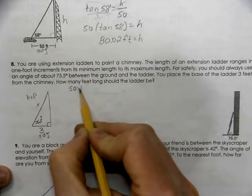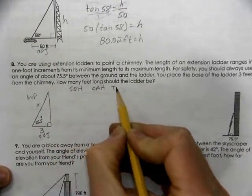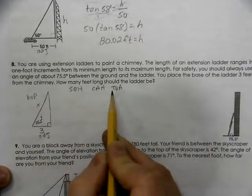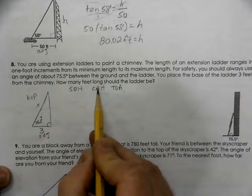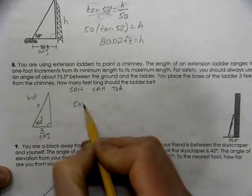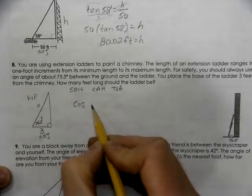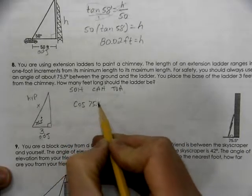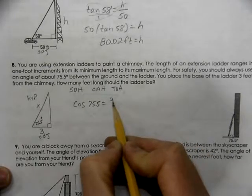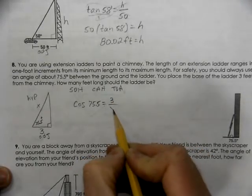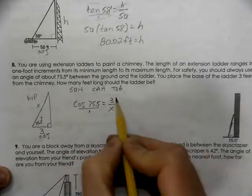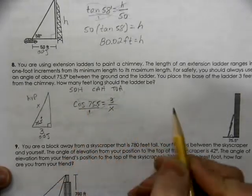So, thinking of SOH CAH TOA, we're going to use adjacent over hypotenuse. Adjacent over hypotenuse. I know that that's going to be the cosine. Cosine of the angle equals the adjacent side to the hypotenuse. Place that over 1 and cross-multiply.